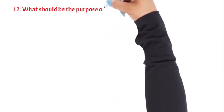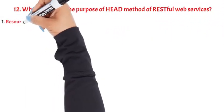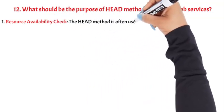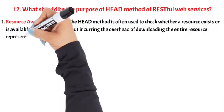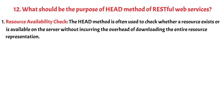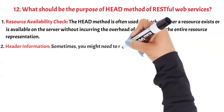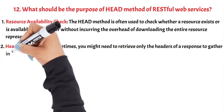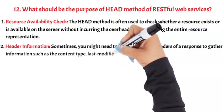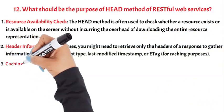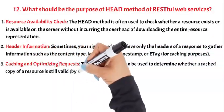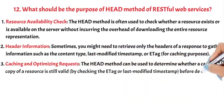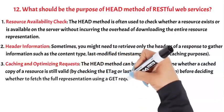Question 12: What should be the purpose of the HEAD method of RESTful Web Services? 1. Resource availability check — the HEAD method is often used to check whether a resource exists or is available on the server without incurring the overhead of downloading the entire resource representation. This can be helpful when determining if a certain resource URL is valid before making a subsequent GET request. 2. Header information — sometimes you might need to retrieve only the headers of a response to gather information such as the content type, last modified timestamp, or ETag for caching purposes. 3. Caching and optimizing requests — the HEAD method can be used to determine whether a cached copy of a resource is still valid by checking the ETag or last modified timestamp before deciding whether to fetch the full representation using a GET request.